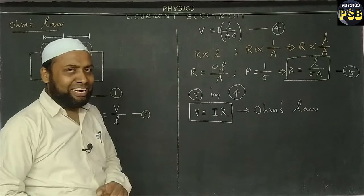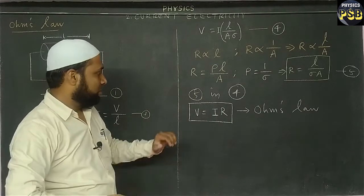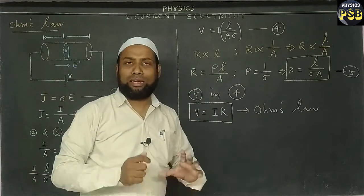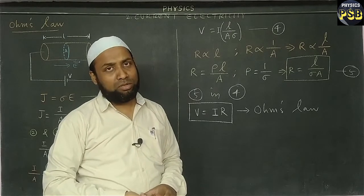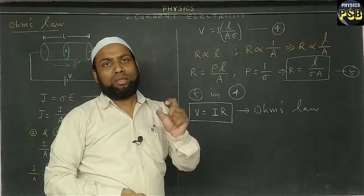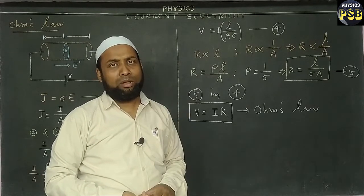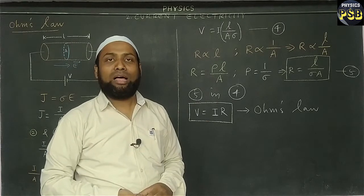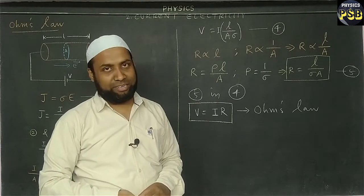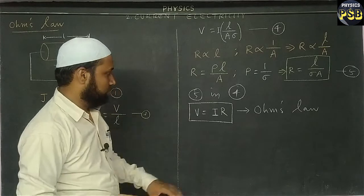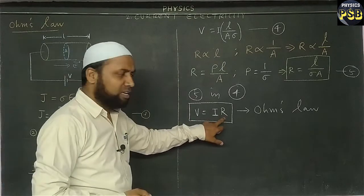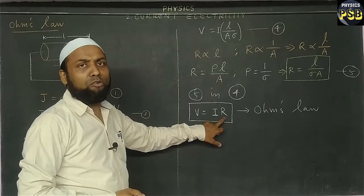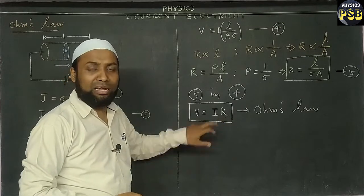This is Ohm's law, and it says that the current flowing in a conductor is directly proportional to the potential difference between the two ends of the conductor. Here R is the resistance offered to the flow of current by the conductor.